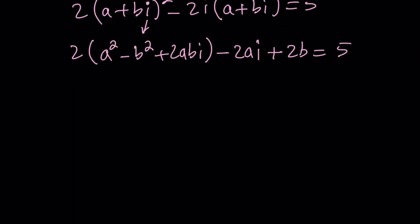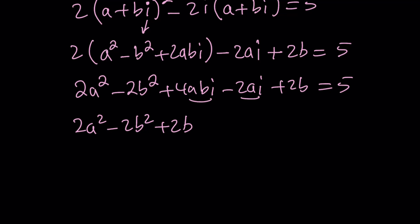So let's go ahead and distribute the 2 and then separate the real and imaginary parts. So 2a squared minus 2b squared plus 4abi minus 2ai plus 2b equals 5. Now, you can subtract 5 from both sides and set it equal to 0 or leave the 5 on the right-hand side. Either way is fine. I'm going to leave the 5 alone and now put together the real parts. 2a squared minus 2b squared plus 2b. That's going to be the real part. And then I have these two terms, which we can factor out an i from. So that's going to be 4ab minus 2a multiplied by i. And the whole thing is equal to 5.